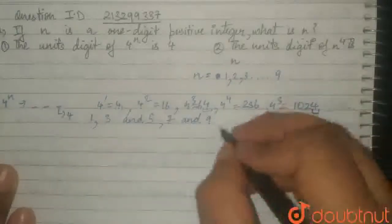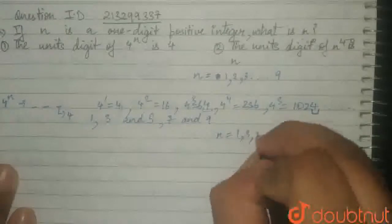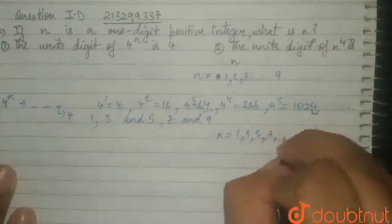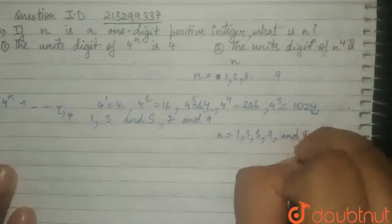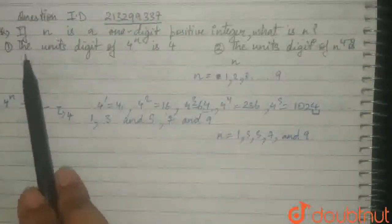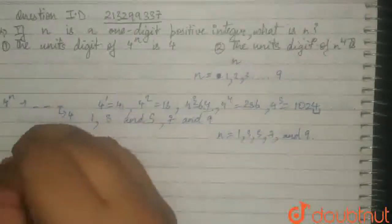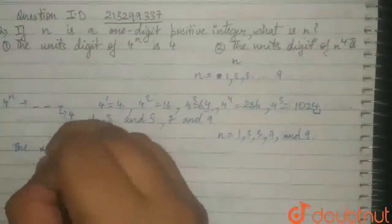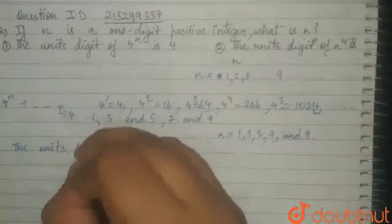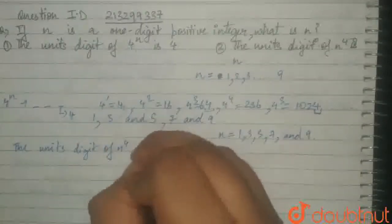We've narrowed n down to 5 values. N can now be 1, 3, 5, 7 and 9. N can take these 5 values, narrowing it from the first equation. The second condition is that the unit's digit of n raised to the power of 4 is n.